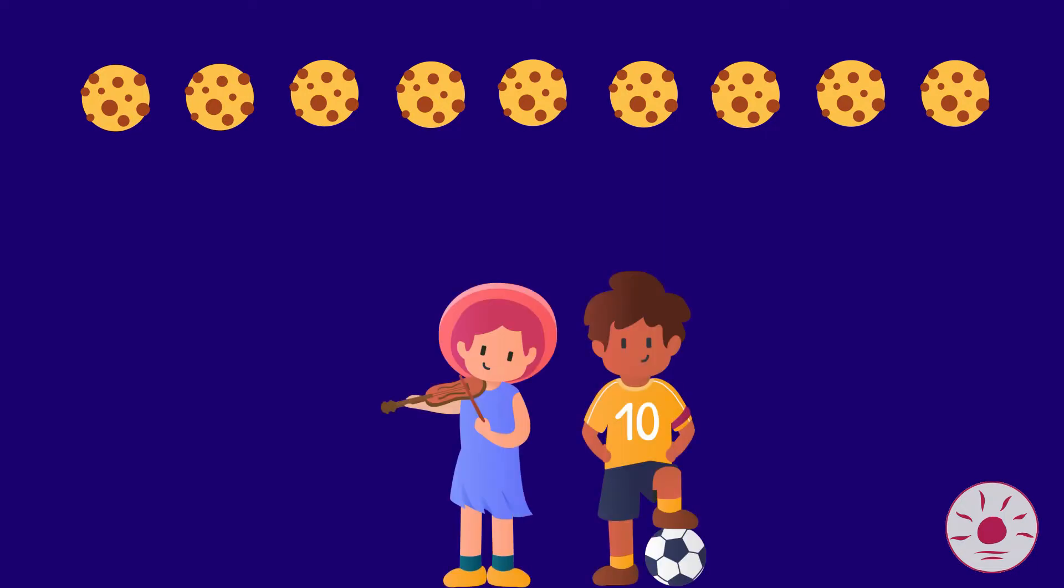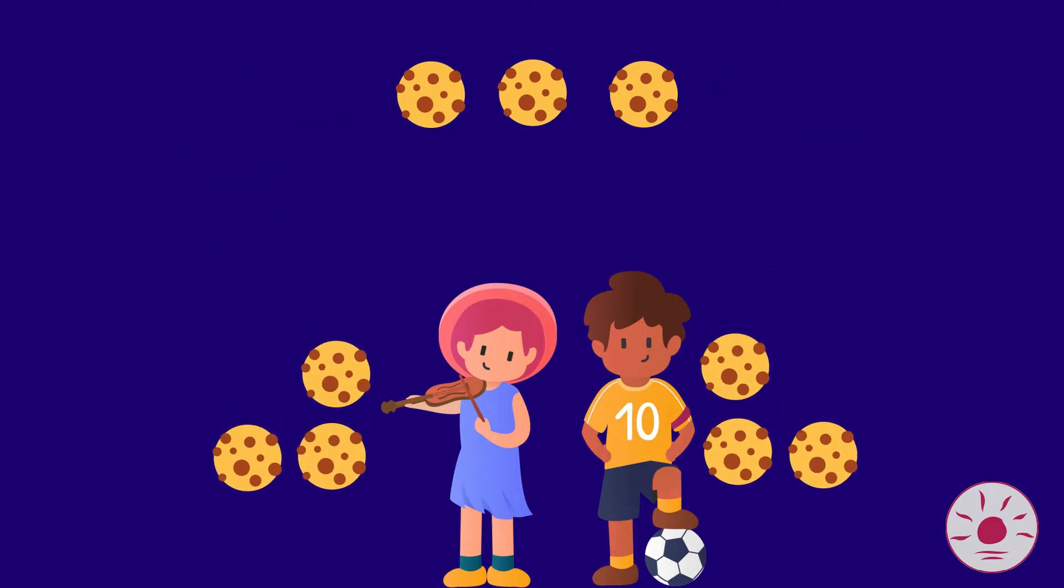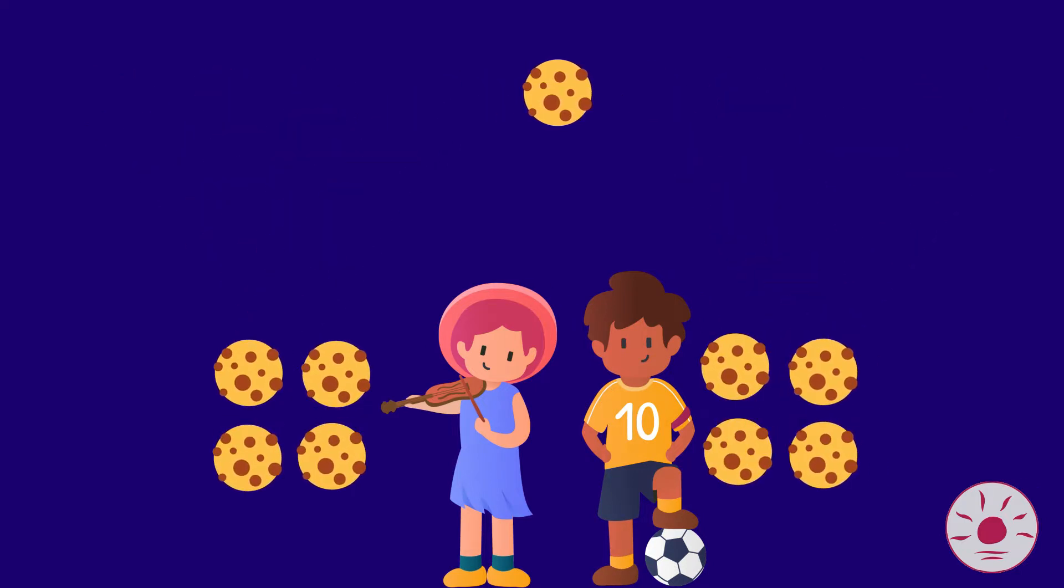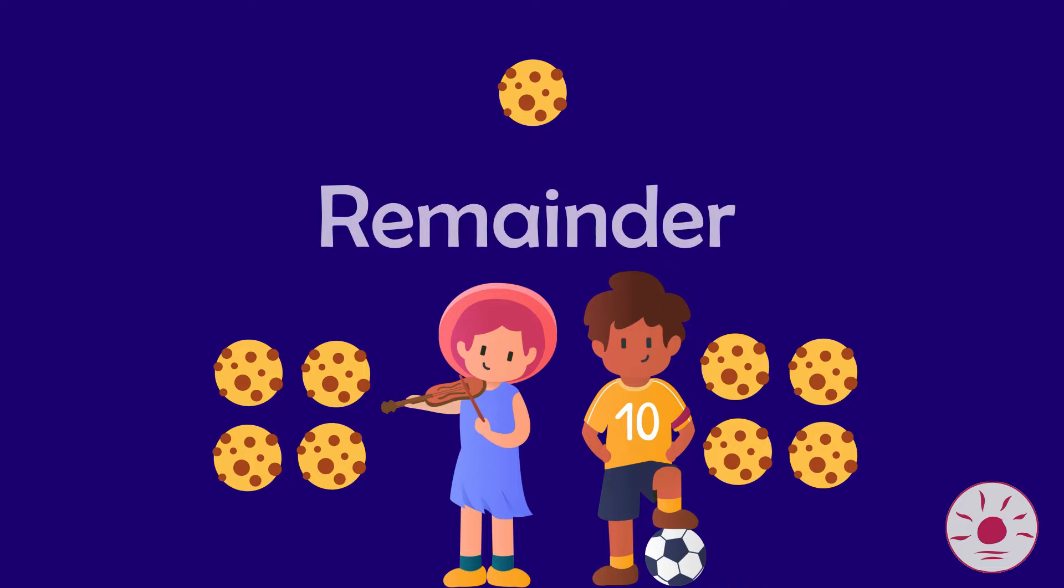What would you do if you had nine cookies and you needed to share them between two people? Two doesn't go evenly into nine. If we try to divide it, we can give each person four cookies, but then we have one left over. When you have something left over, like this cookie, it's called a remainder. In this case, we'll split the cookie in half to share it between our two friends here.